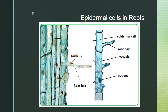Another modification is root hairs — modified epidermal root cells that increase surface area for absorbing more water and nutrients. The greater the surface area to volume ratio, the greater the absorption. Root hairs can also have a symbiotic relationship with rhizobium bacteria.